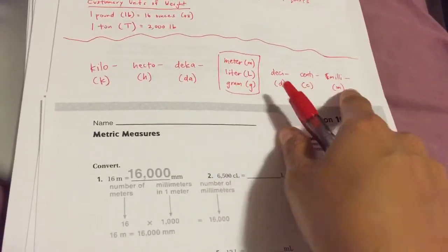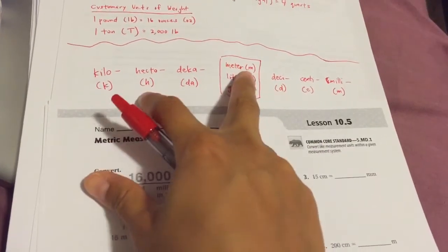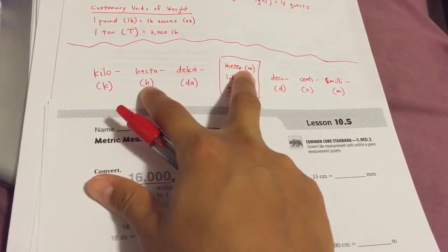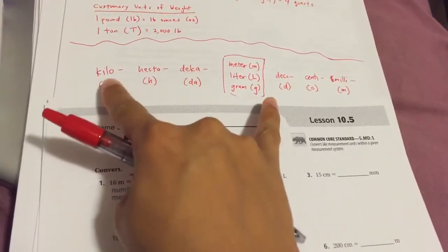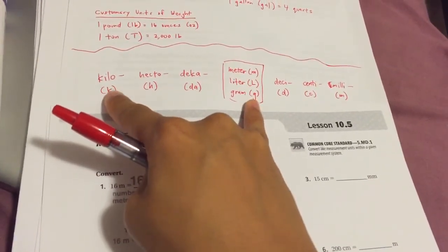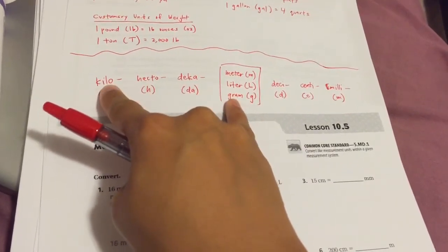When we're using these, we'll team one of these up with one of these. You might see like an HM, and if you see the letter HM, it means hectometer. You might team up a K and a G, kilogram. This is the beginning of the word, this is the end of the word.